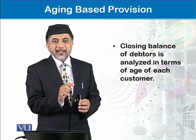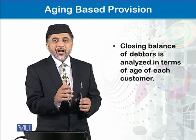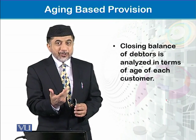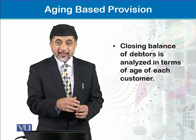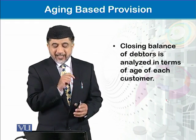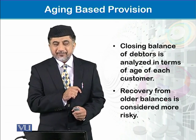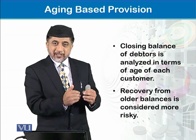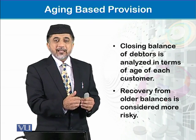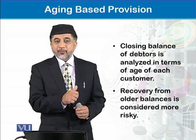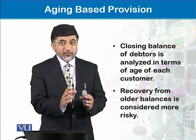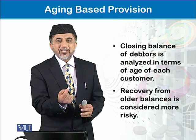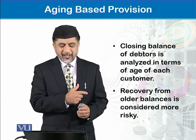From that date onwards they are our debtors, so we have to see how old those debtors are — this is their age. We do age debt analysis of the customers, and the debtors from whom the recovery is older are considered more risky debtors. So for more risky debtors the provision rate will be more, and for debtors who are not that old in age the rate of provision will be less.